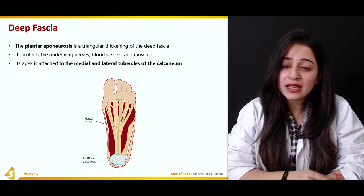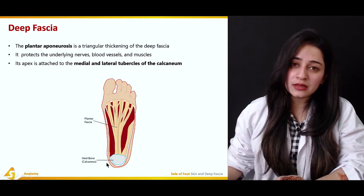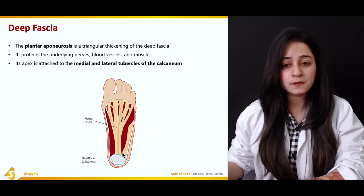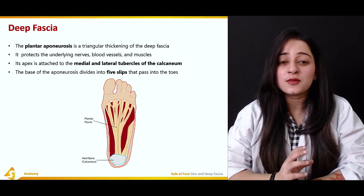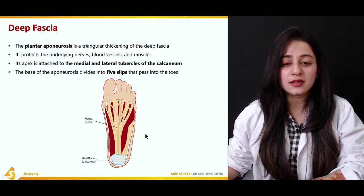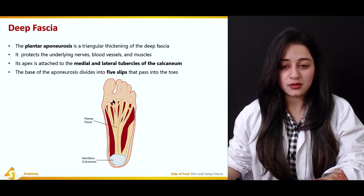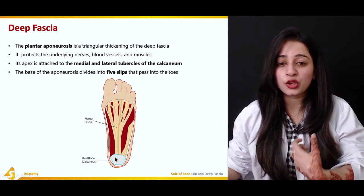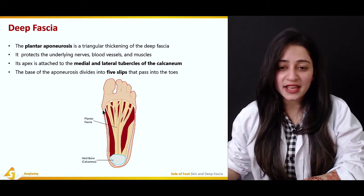The apex of the plantar aponeurosis is attached to the medial and lateral tubercles of the calcaneum — the heel bone. That is its origination point. The base of the aponeurosis then divides into five slips, which pass forward to supply all five toes — the big toe and the four lateral toes. So it originates from the calcaneum bone in a triangular shape, then divides into multiple slips supplying all five toes.